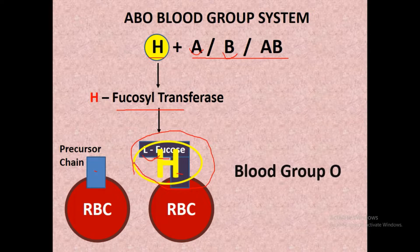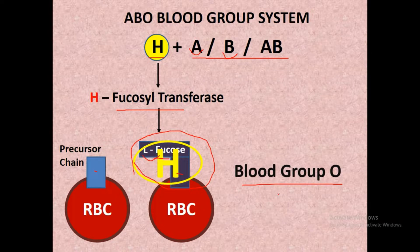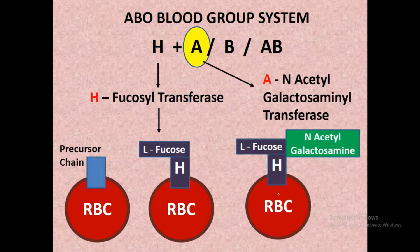The person who has H substance on the surface of their RBC has blood group O, because they don't have any antigen A or antigen B on the surface of their RBC.